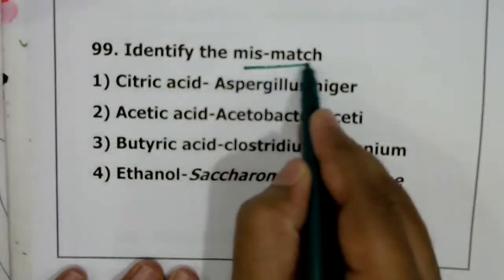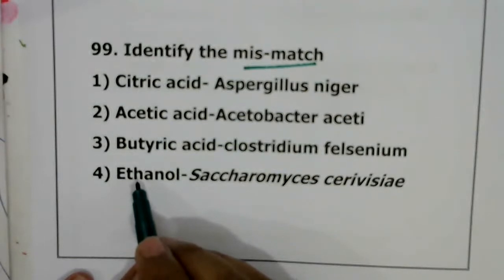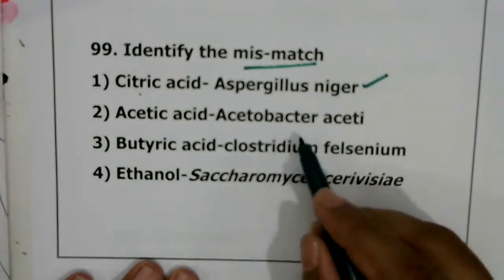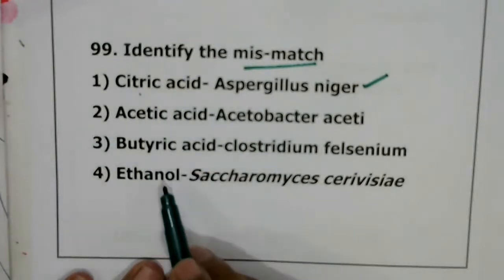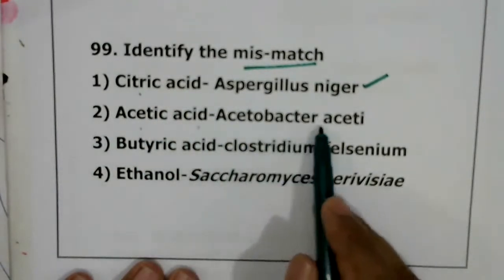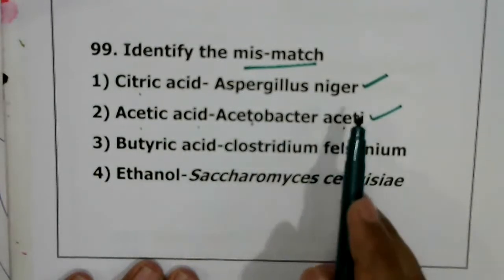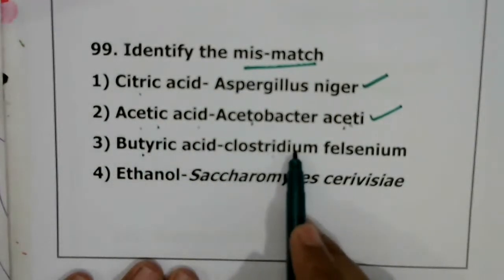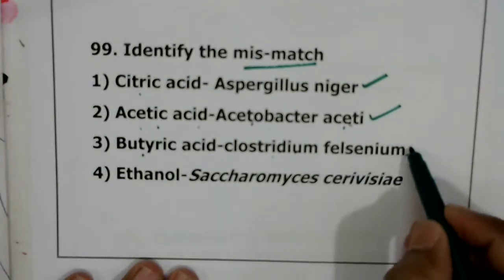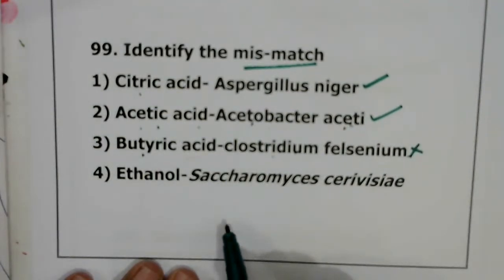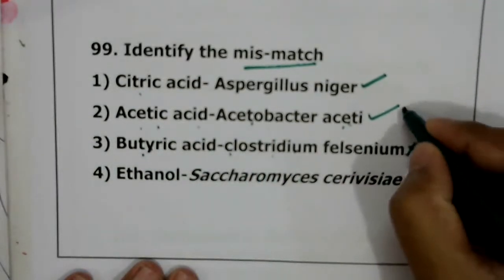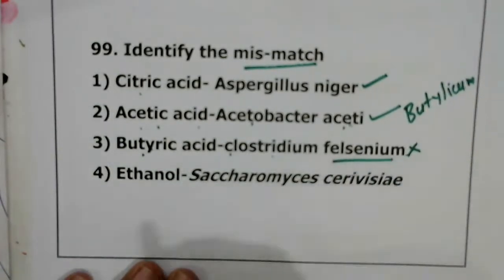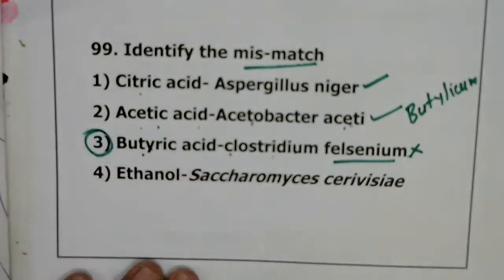Question 99: identify the mismatch. Citric acid produced by Aspergillus niger — correct. Acetic acid produced by Acetobacter aceti — correct. Butyric acid produced by Clostridium falcinium — this is wrong. Butyric acid is produced by Clostridium butylicum. They have given 'falcinium,' which is not correct. So question 99, correct option is the third one.